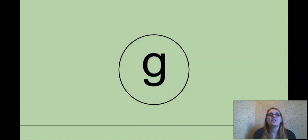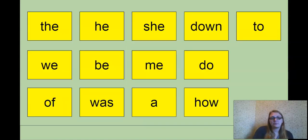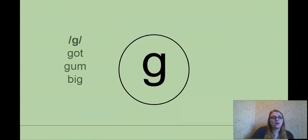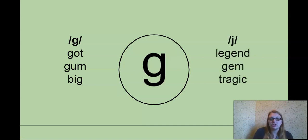Our tricky letter G. Our tricky spelling G. Normally when we think of G, we hear guh, right? Such as in got, gum, and big, right? But the letter G can also sound like a J, like a J, like the word legend, gem, tragic. All of those words, you can hear the J sound. So G can be tricky.